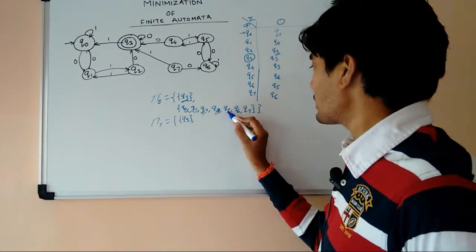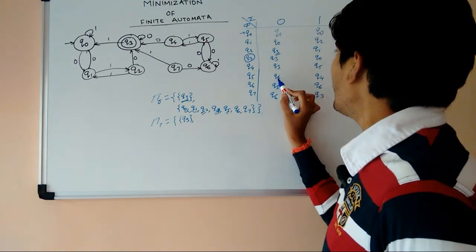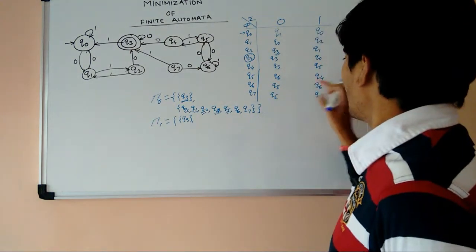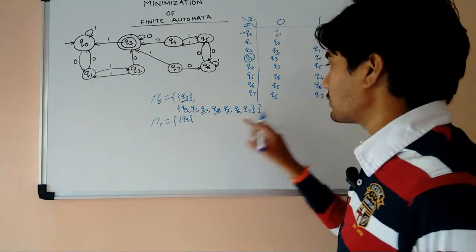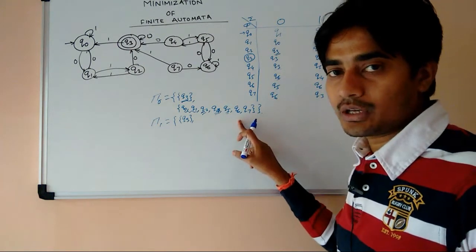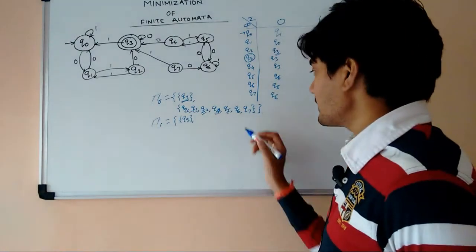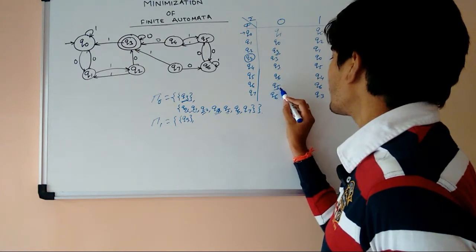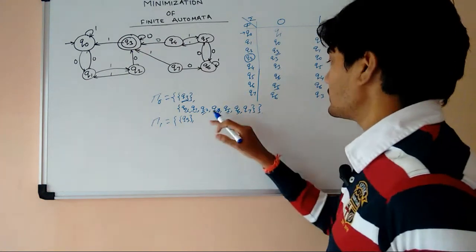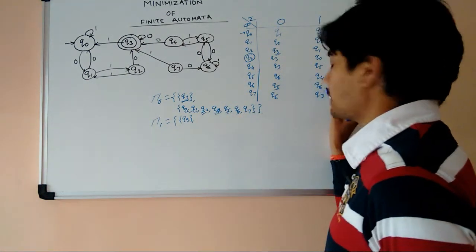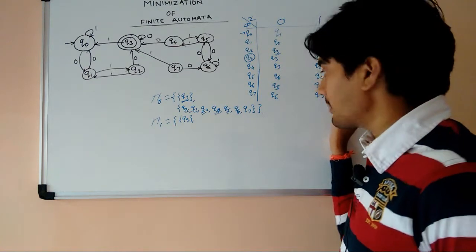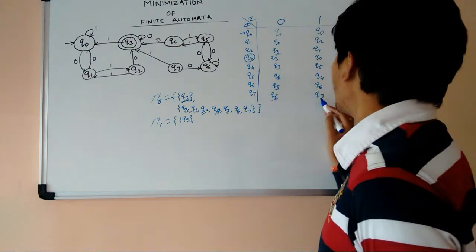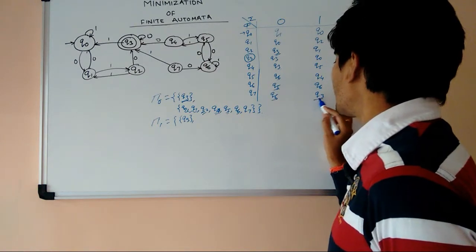Similarly we check Q5: Q5 for 0 goes to Q6, which is in the same set, and for 1 it goes to Q4 — no problem. For Q6: Q6 for 0 goes to Q5 (same set), and for 1 it goes to Q6 — no problem. But for Q7: for 0 it goes to Q6, and for 1 it goes to Q3, which is the final set. So there is a problem with Q7.